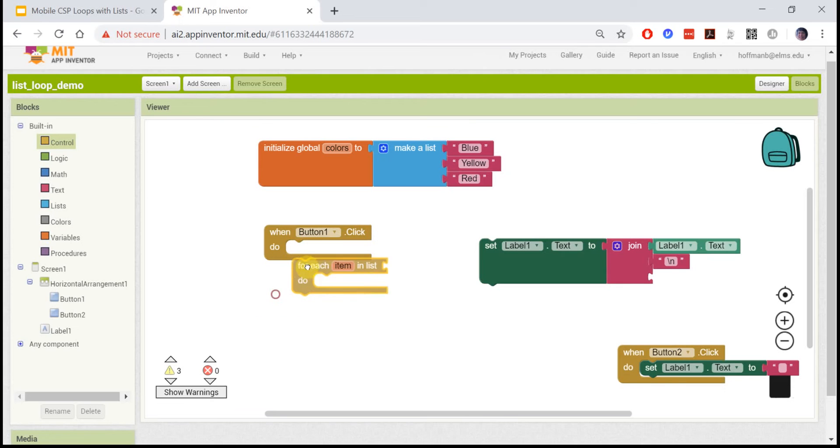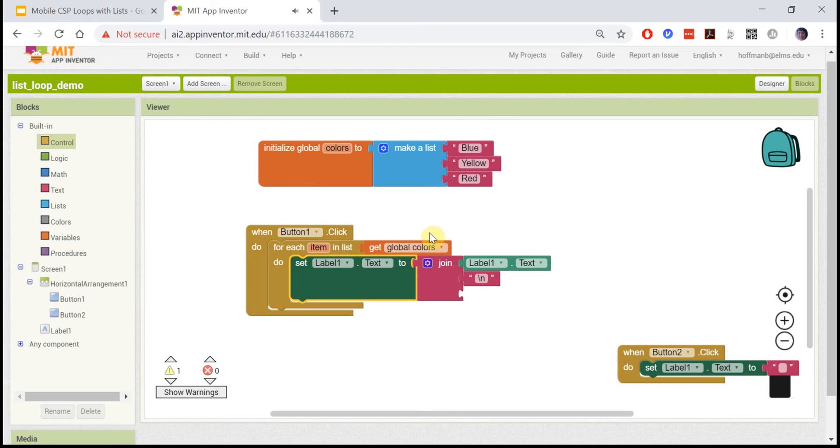This is a simple app where we have a list of colors. For each item in this list, what we want to do is put that item into the label. I'm joining it to whatever is in the label currently with a backslash n, which is a new line.